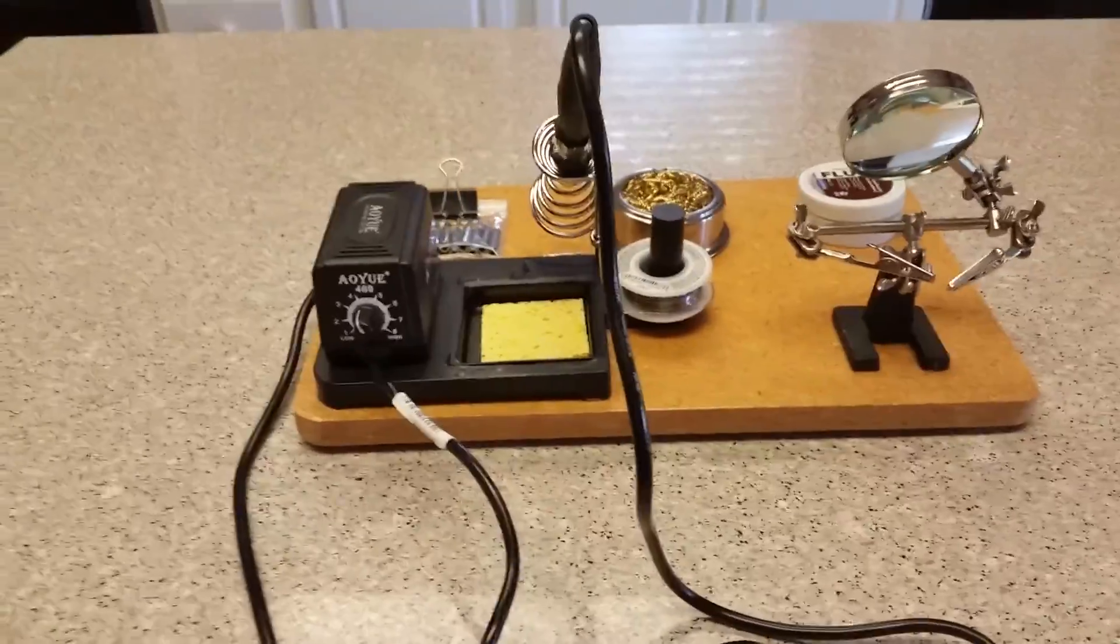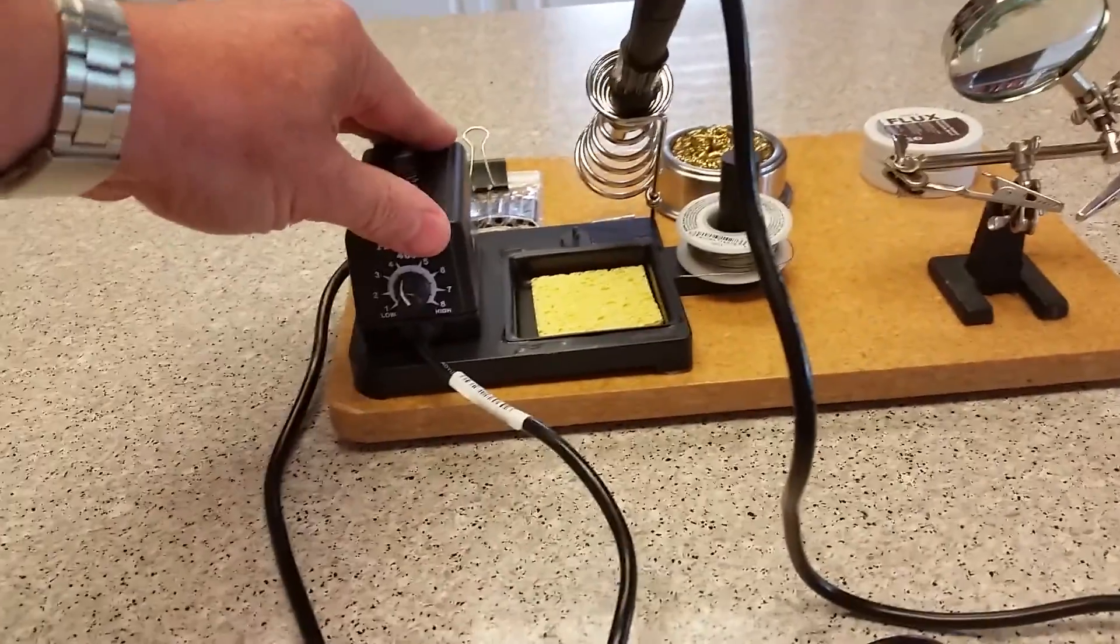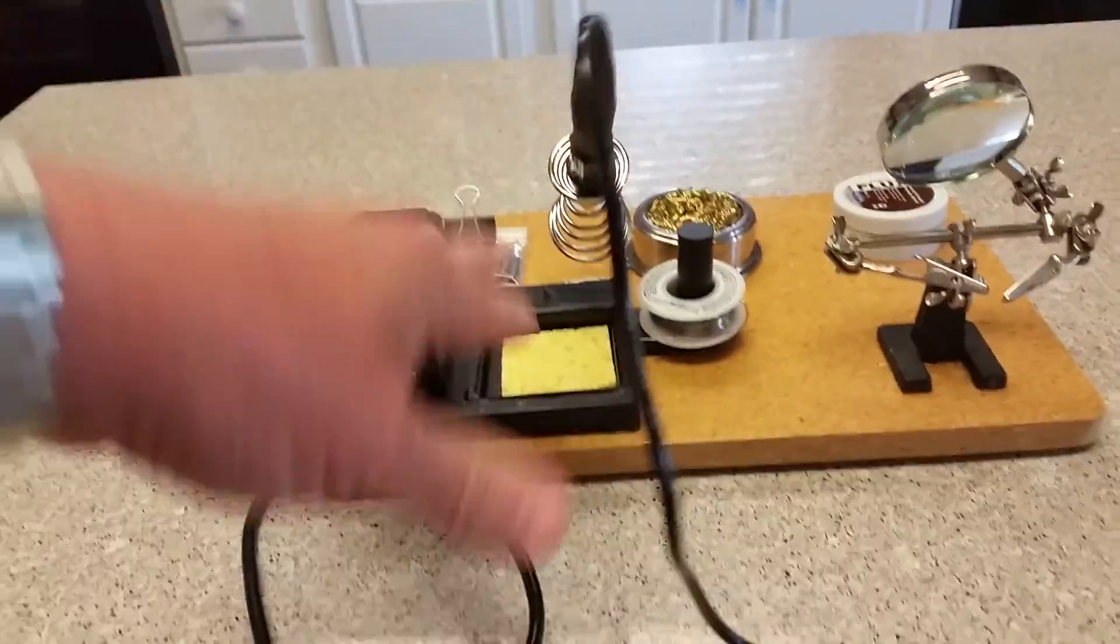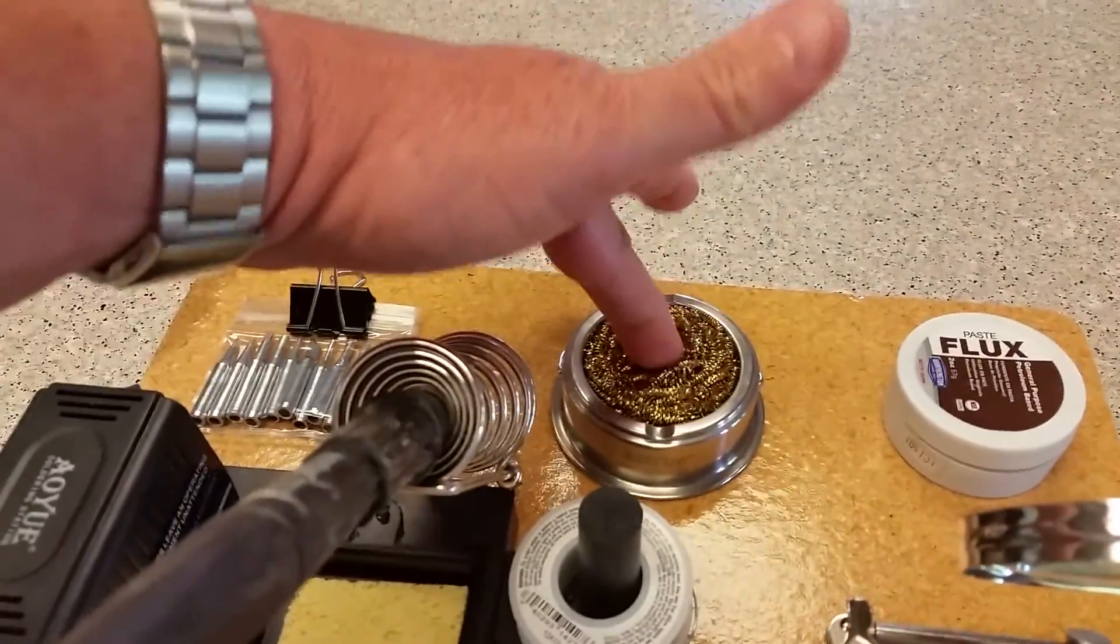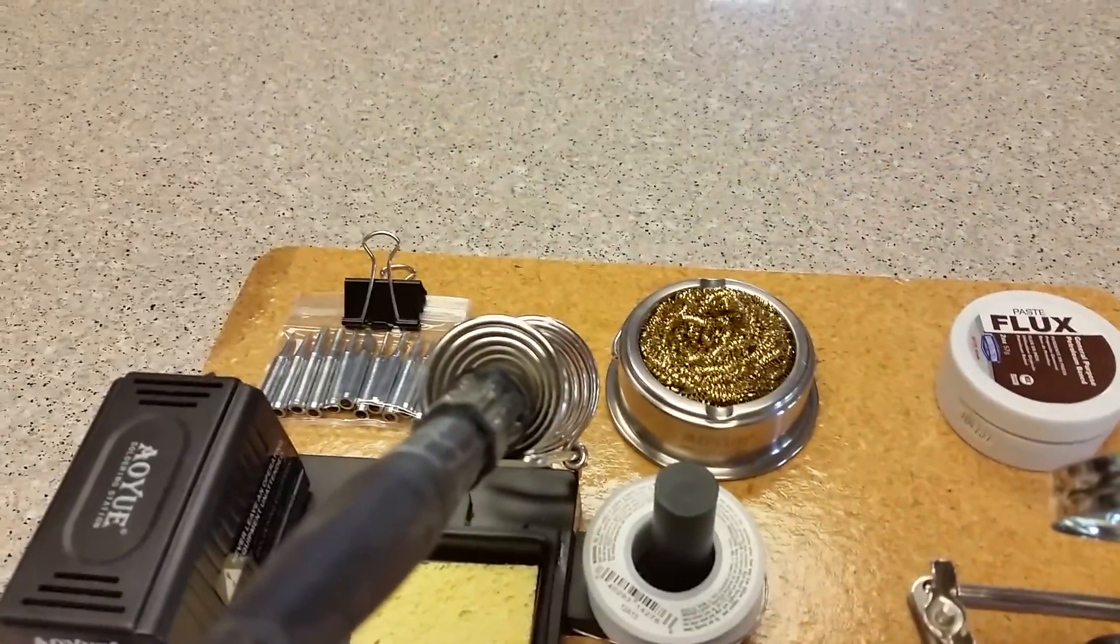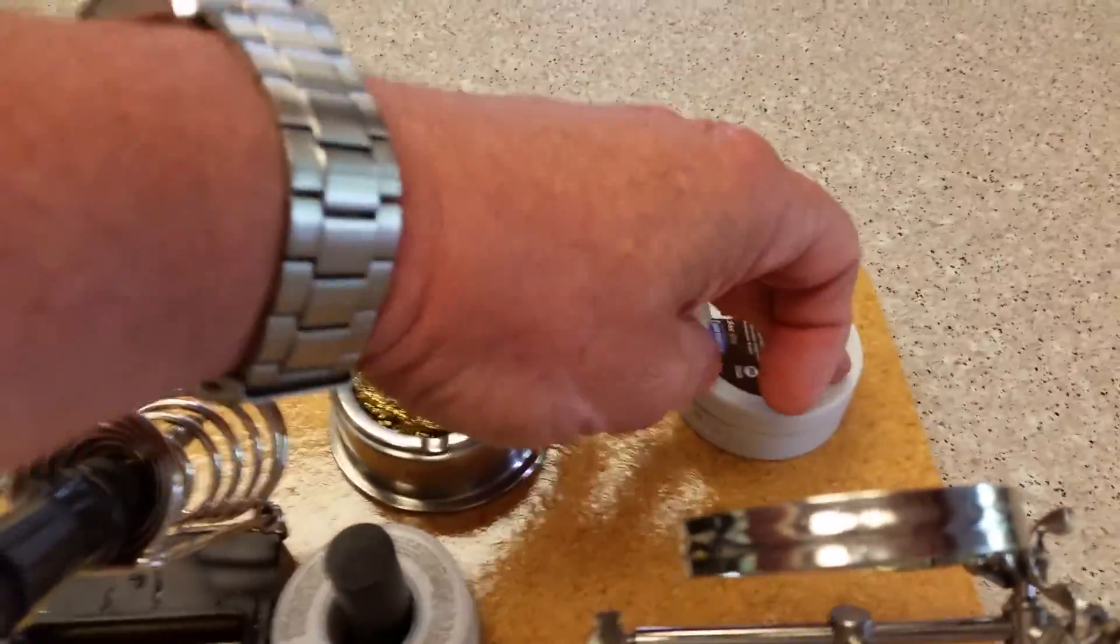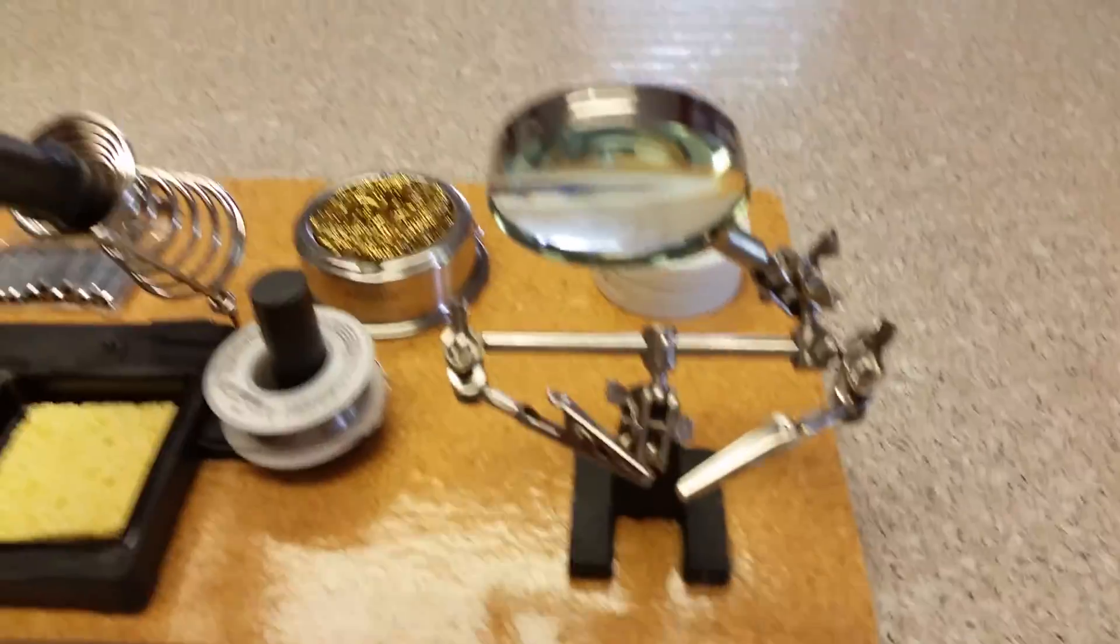So this is the AU soldering station I bought, and along with it I bought the brass cleaning scrub pad. Here sitting on the board I've got my flux, extra bits that I bought at the same time, and my helping hands.